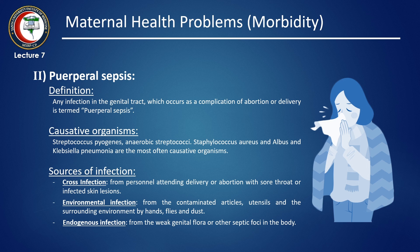There are three modes of transmission: cross infection, environmental infection, and endogenous infection. Cross infection comes from personnel attending delivery with sore throat or infected skin. Environmental infection comes from contaminated articles and the surrounding environment via hands, flies, and dust. Endogenous infection comes from the normal genital flora or other septic foci in the body.